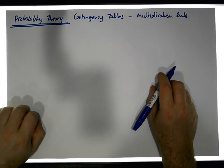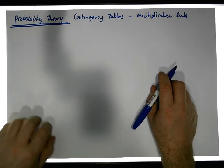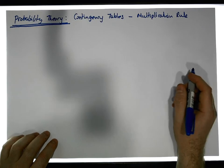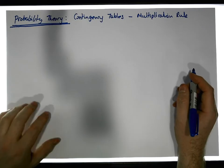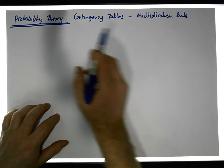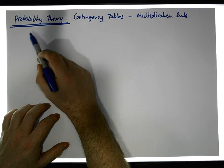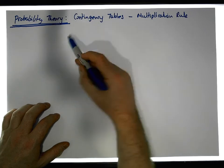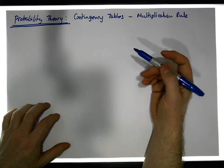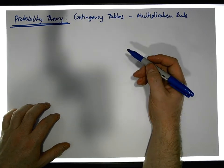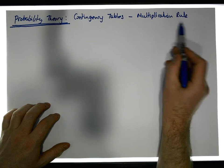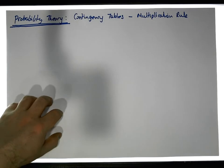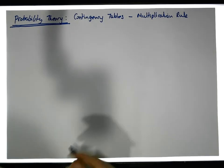Hi guys, this is Jonathan Lambert with the Mathematics Development and Support Service at National College of Ireland. This is another video in our series dealing with probability theory and, more importantly, using contingency tables to explore particular probability rules. It's going to concentrate on the multiplication rule.